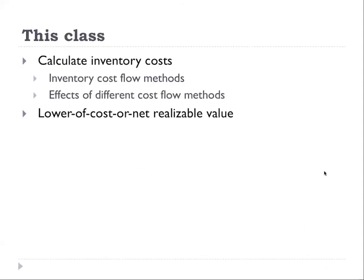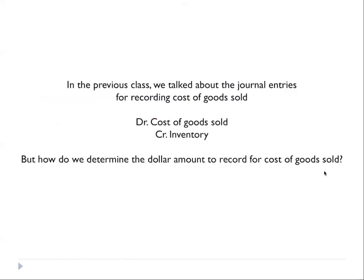In this class we're going to talk about inventories. Specifically, we're going to talk about how to calculate the cost of inventories. The cost of inventory depends on the cost flow method the firm uses, and then we're going to talk about something called lower of cost or net realizable value. Whenever the firm sells something, there are two general entries the firm makes. The second one is to record the cost of goods sold — debit cost of goods sold, credit inventory. In the previous class, the cost of goods sold was just given to you. However, in practice, the cost of goods sold actually needs to be determined. The question is how do we determine the dollar amount to record for cost of goods sold?